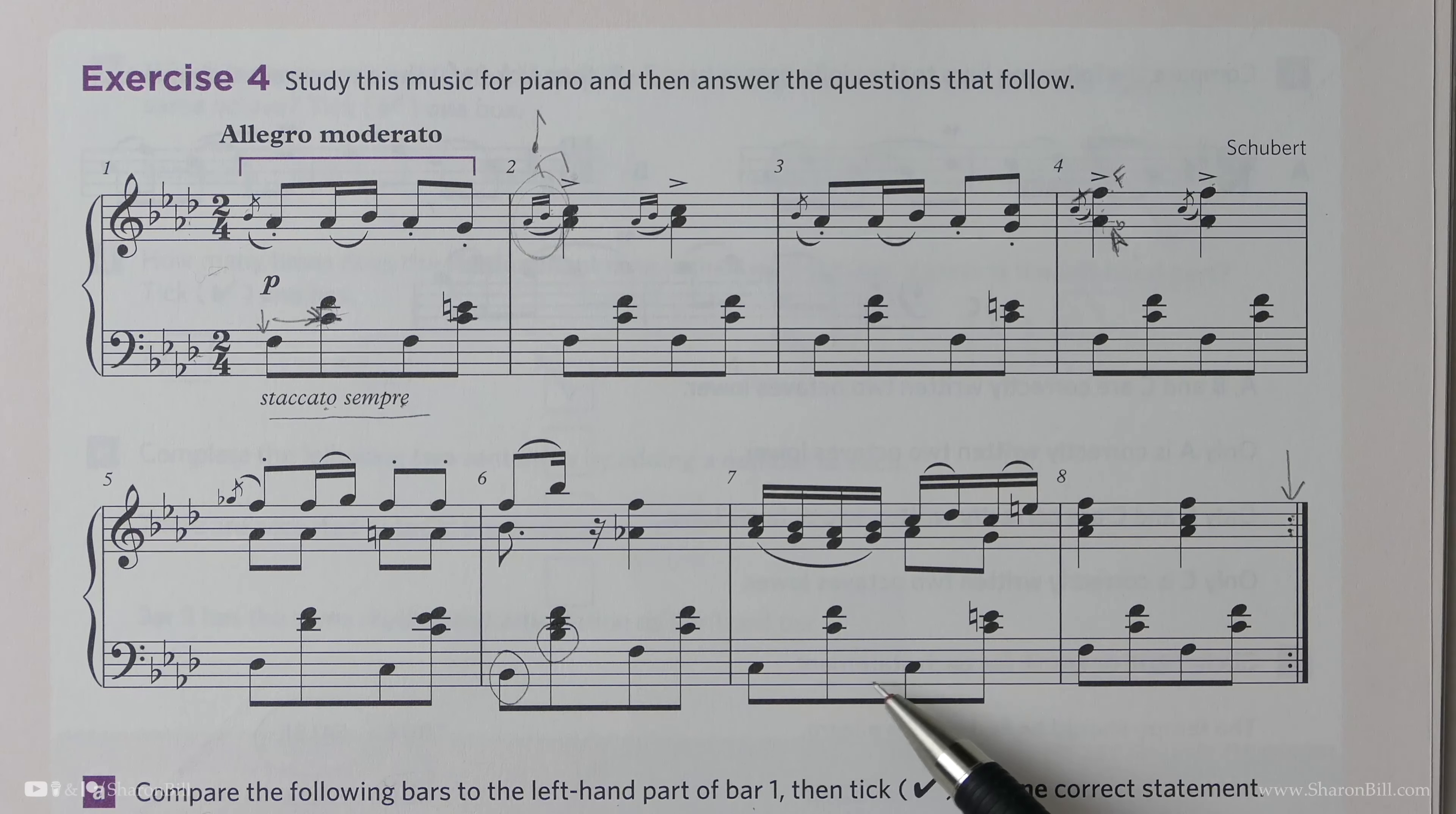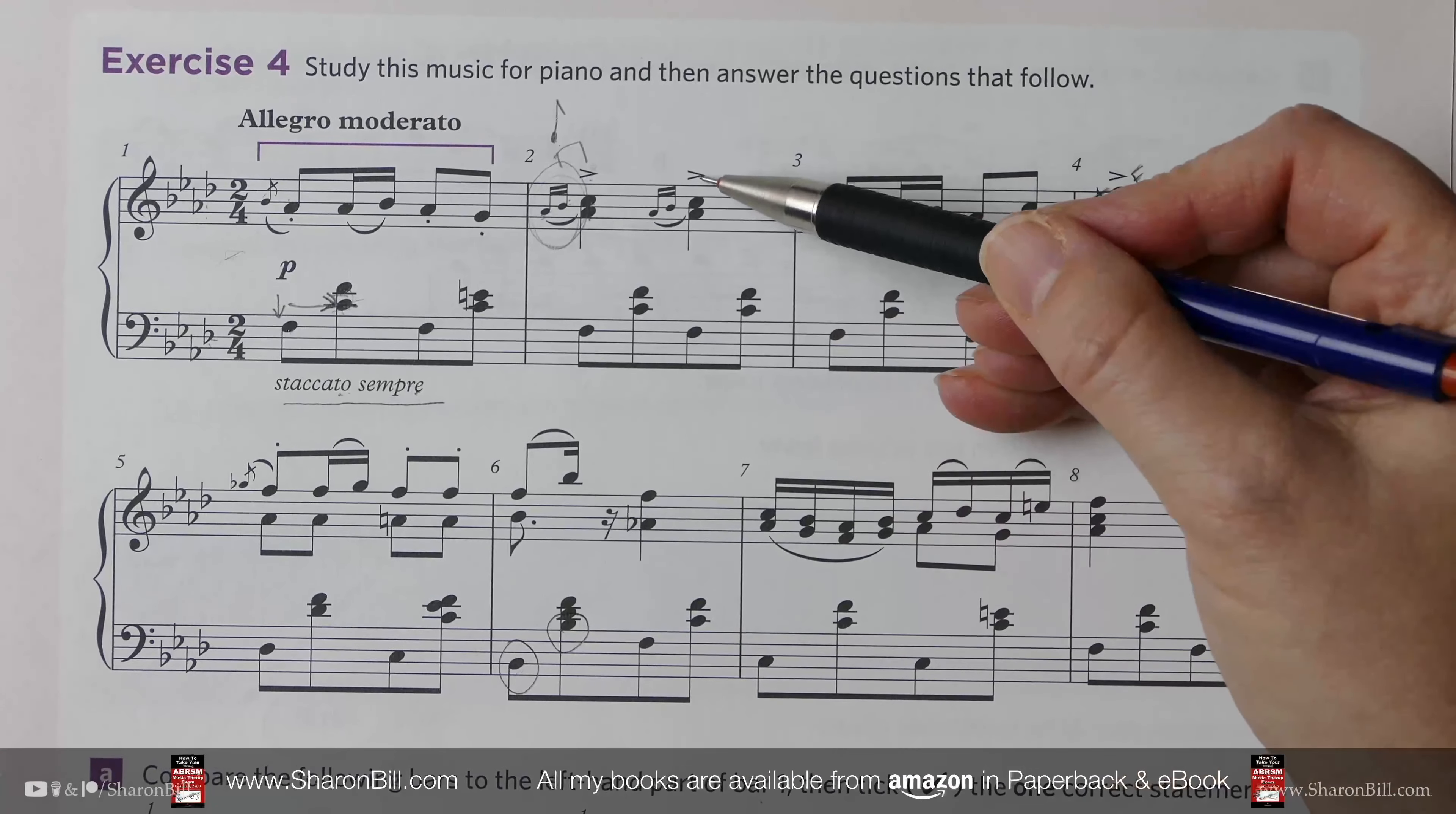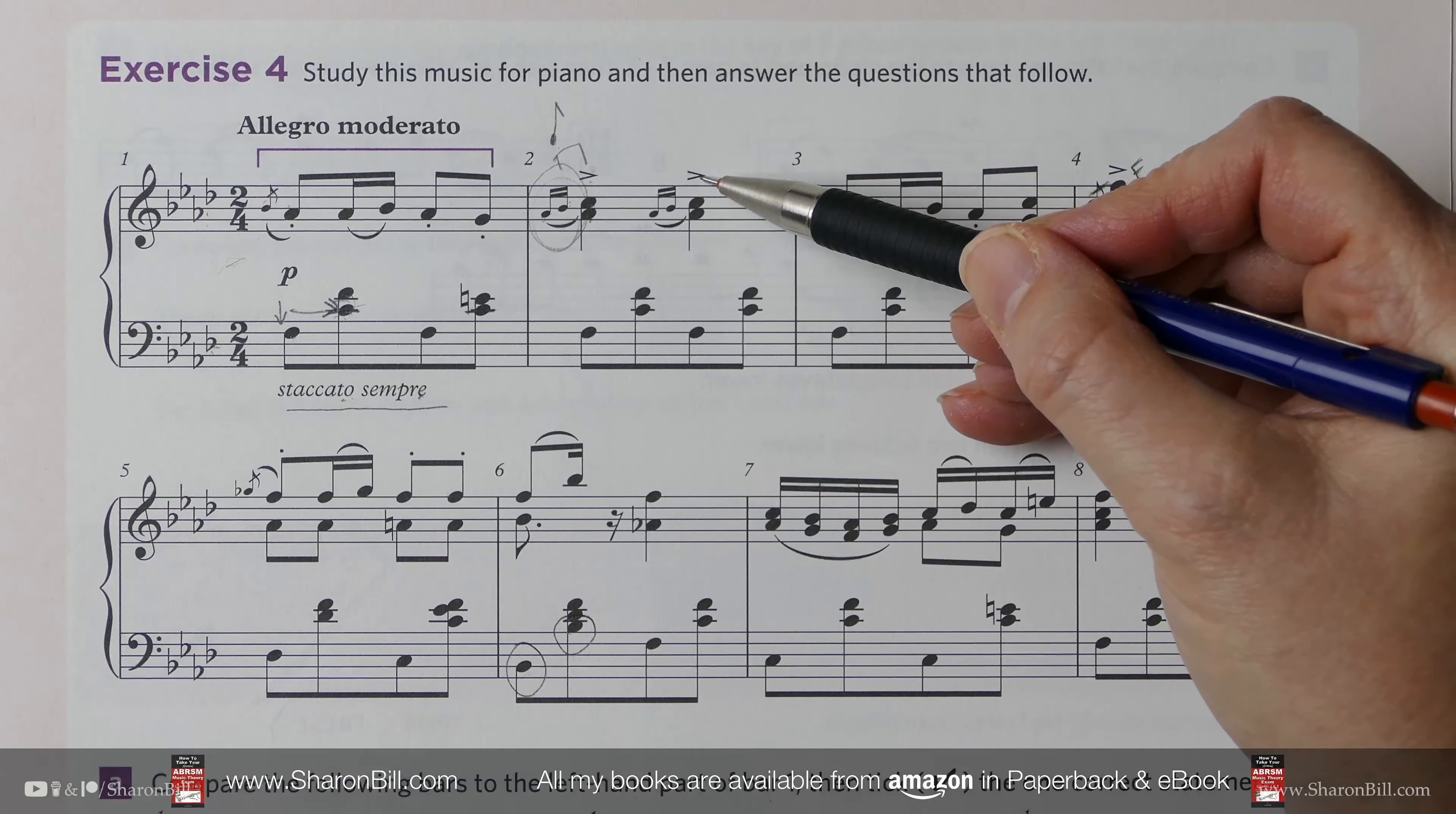Finally, we're asked to find some accented notes. We can find some in bar two and then following on. Here is the accent—that's the sign for the accent. We see that in bar two, and then we see it again in bar four. Because they've told us it's in bar two, we've got a good clue what to look for later.